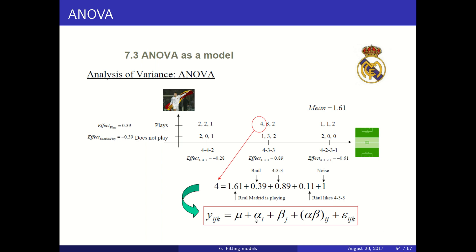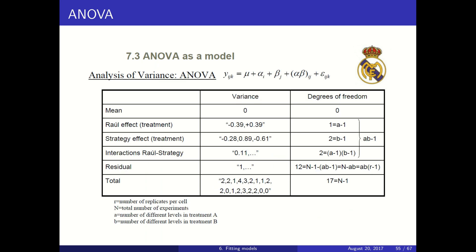This equation is the one of ANOVA, and it is a case of a linear model — observations modeled as a sum of contributions. We can tune these linear models to our problems. For instance, if we are not interested in interactions, we can delete the interaction term.